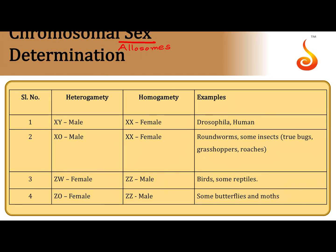These allosomes are involved in the process of sex determination. The most common example is the XX/XY type: females have two X chromosomes, males have one X and one Y chromosome. It is seen in Drosophila, where the genic balance theory is also operative, and then in the case of humans.